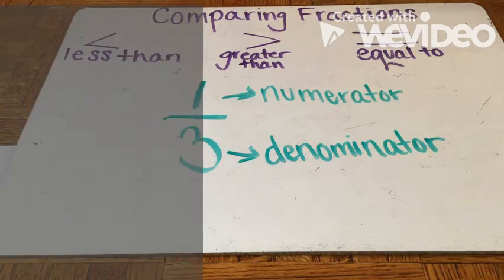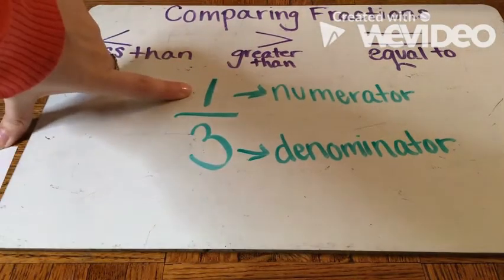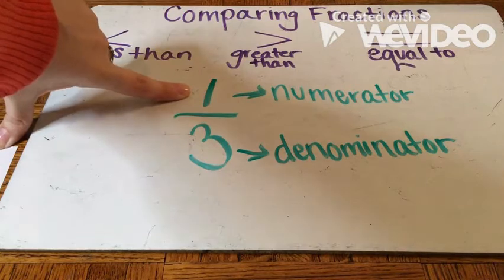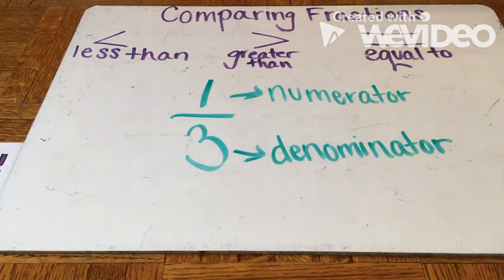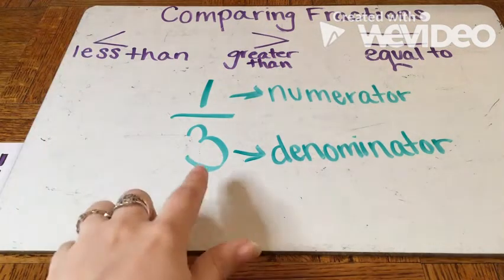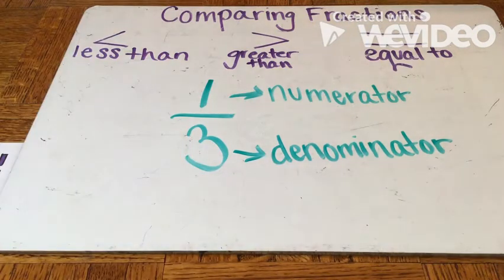And just as a quick review, remember fractions must have equal parts. If the parts are not equal, it is not a fraction. Looking at my fraction one-third, the top number is also known as the numerator. So my one is the numerator and that would be the number of parts that are missing or shaded in, depending on your question. Then I have my bottom number, which is my denominator, and that would mean that is the total number of parts or pieces in my whole or set.